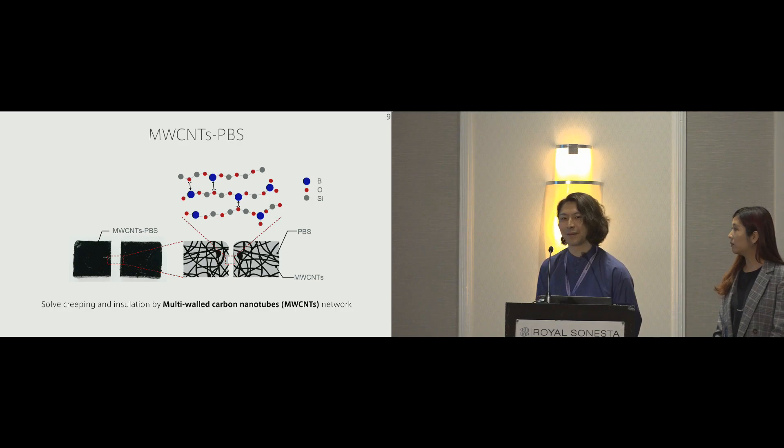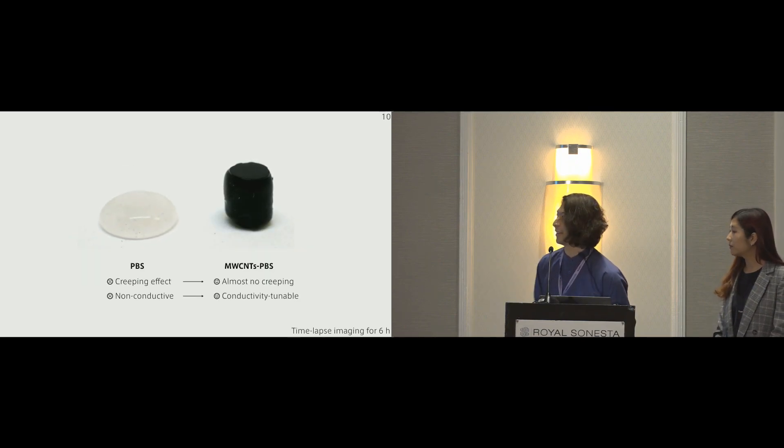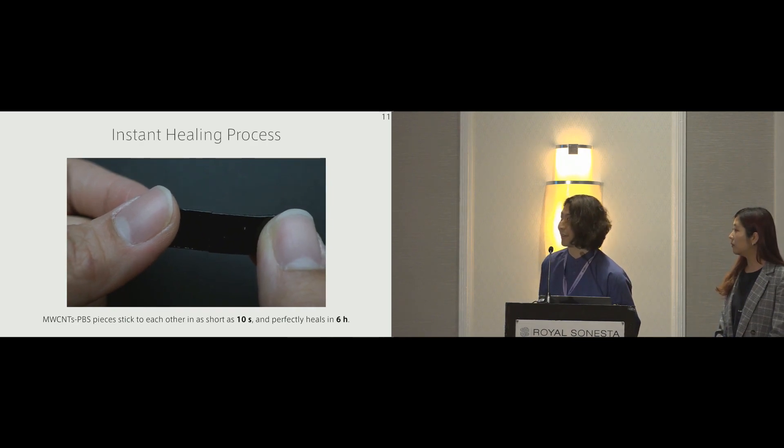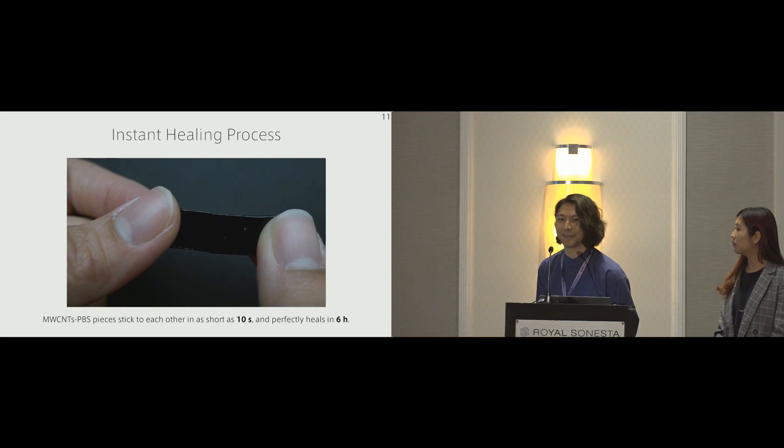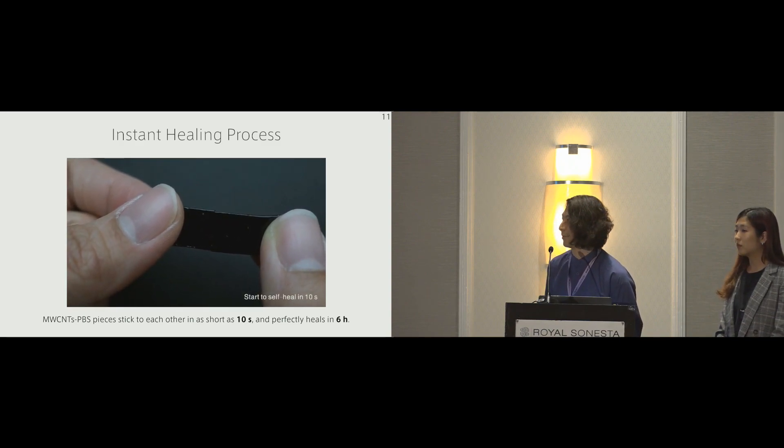In order to solve these problems of creeping and insulation, we use the material multi-walled carbon nanotubes PBS. This is a composite material of multi-walled carbon nanotubes and PBS. Carbon nanotubes form a network structure inside of the composite, and this prevents and sustains the PBS from flowing around. The other benefit of using multi-walled carbon nanotubes network is this can also work as a conductor. As you can see in the video, although PBS shows a large deformation, multi-walled carbon nanotubes shows almost no deformation. And this material is also conductivity tunable, which is very suitable for device fabrication. And of course, this carbon nanotubes PBS inherits the mechanical healing property from PBS. As you can see, these pieces start to stick to each other in as short as 10 seconds, and then perfectly heal in six hours.